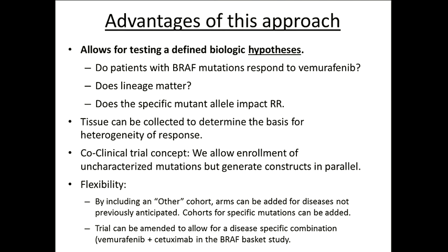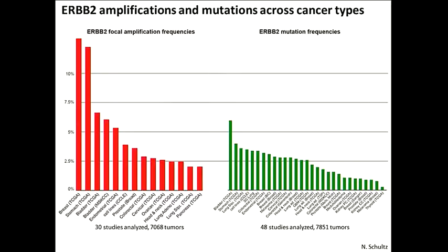We can collect tissue in these patients to study the heterogeneity of response. We can do a co-clinical trial concept. And these studies are very flexible — you've got this 'other' arm where you can enroll patients you might not have thought going in might be sensitive. Basket studies are most useful when something is rare — you don't need a basket study to test vemurafenib in BRAF-mutant melanoma, those patients are not hard to find. You're looking for things that are rare.